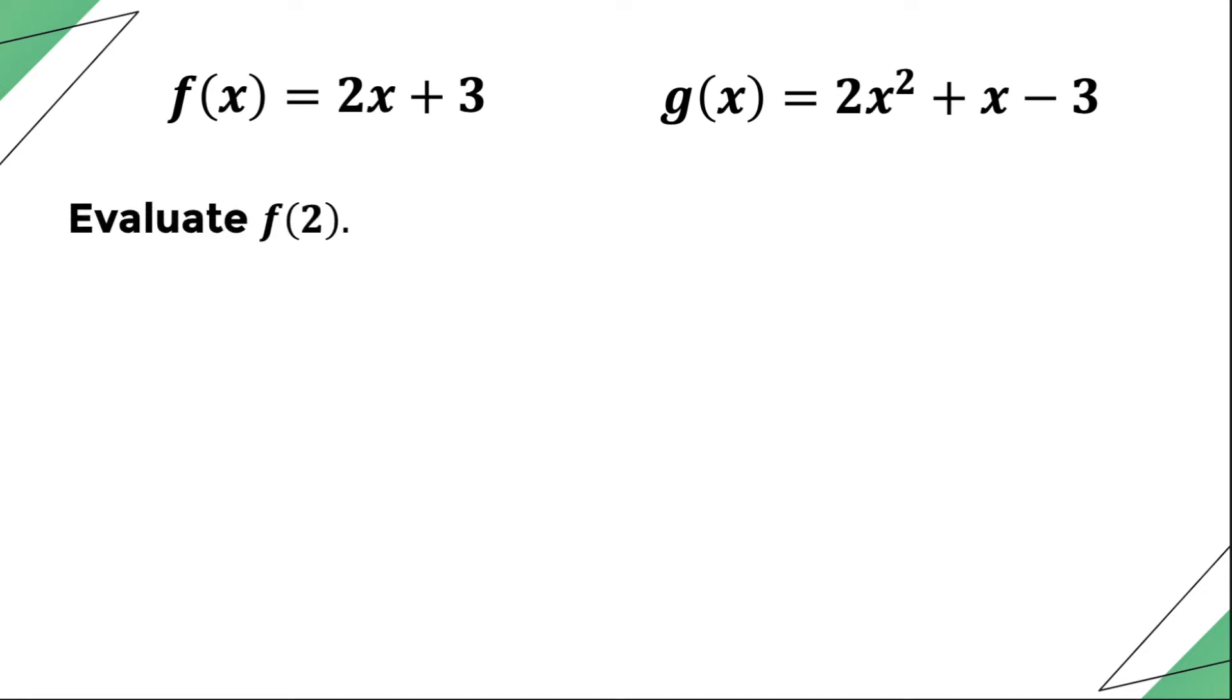Let us evaluate f(2). This means that we have to substitute 2 to the variable x for the function f. Therefore, we have 2 times 2 plus 3 which is equal to 7.